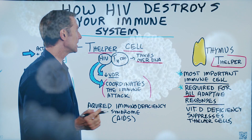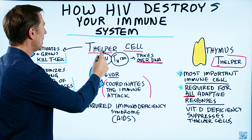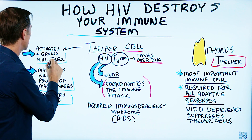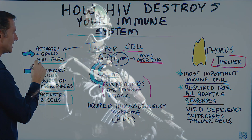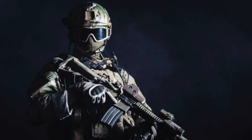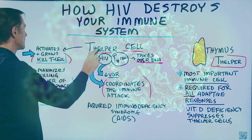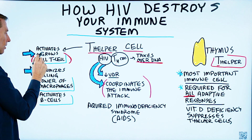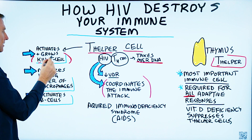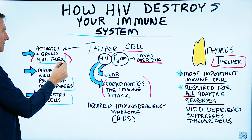If you think about it, the T helper cells are recruiting killer T cells, which are your special forces dedicated to killing viruses — hence the name killer T cells. The T helper cell activates and grows the killer T cells.